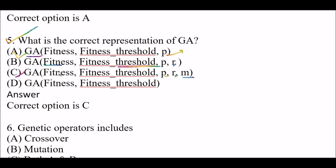Option D: Genetic algorithm includes only fitness and fitness threshold. Correct representation is Option C — genetic algorithm includes fitness, fitness threshold values, P, R, and M. P stands for random hypothesis, R stands for random variable, and M stands for mutation.